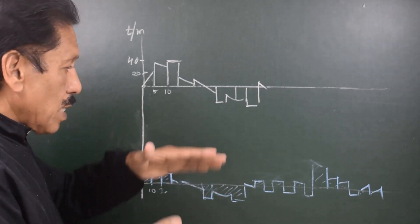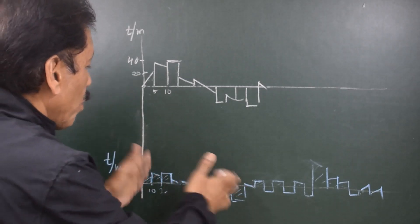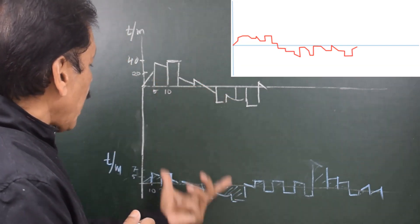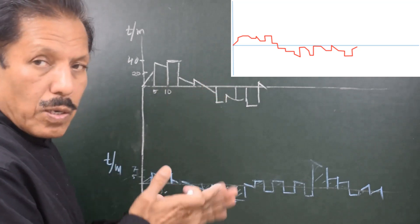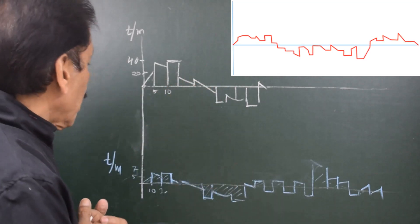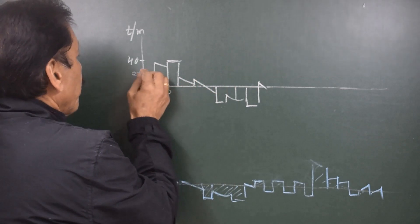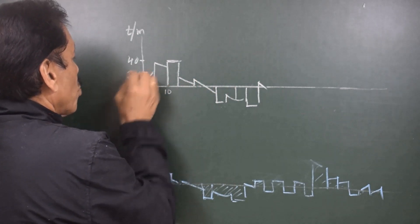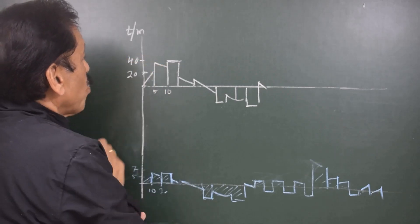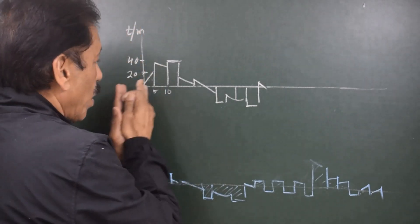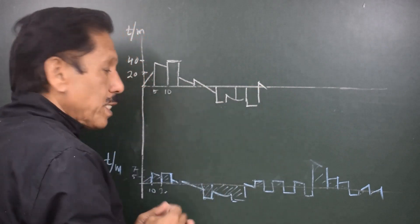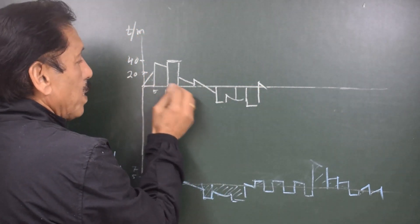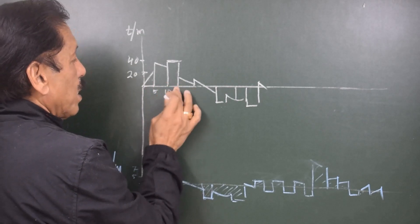To slightly change the scale, I will take a small portion of the load curve here. This portion is replicated from the original, only the scale is a little bit increased. On the y-axis we have 20 tons per meter, 40 tons per meter — the scale is tons per meter — and on the horizontal axis it is meters: 5 meters here, 10 meters here, 15 meters here and so on.